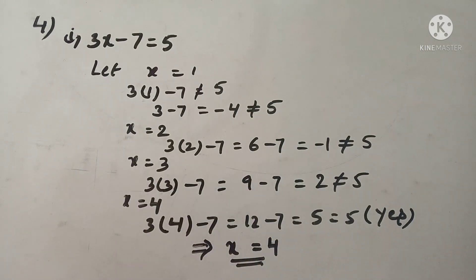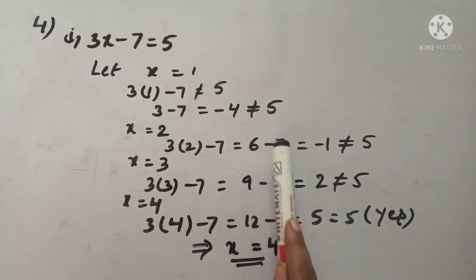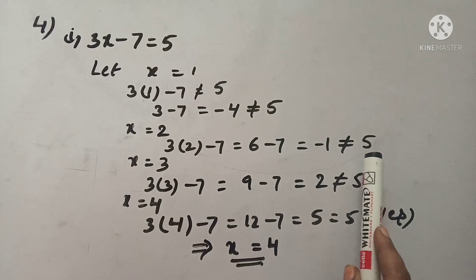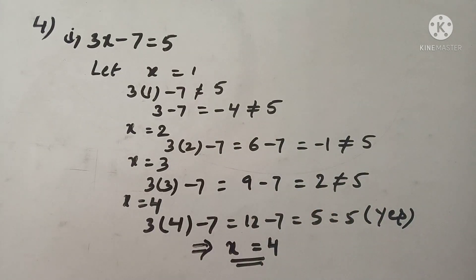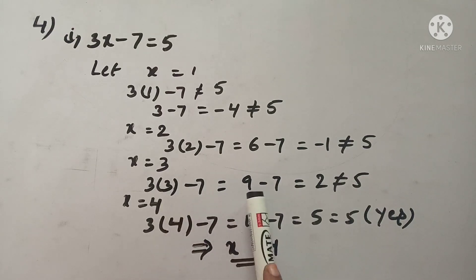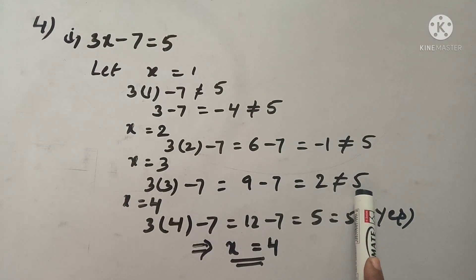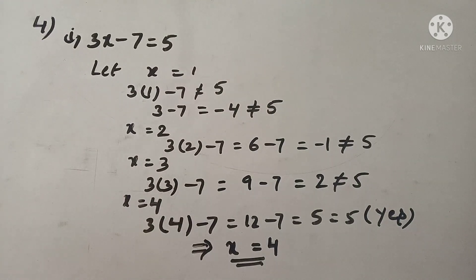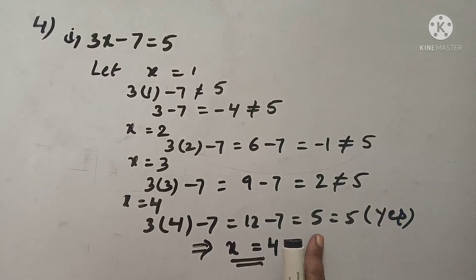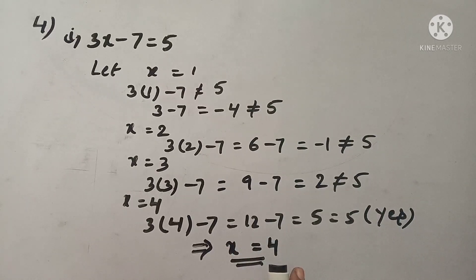Now x equals 3: 3 into 3 minus 7 is 9 minus 7 which is 2, not equal to 5. Now x equals 4: 3 into 4 is 12 minus 7 which equals 5. It is the solution of that equation. So x is equal to 4.